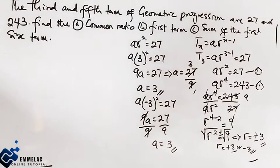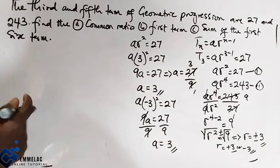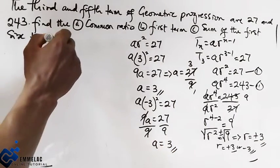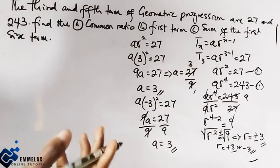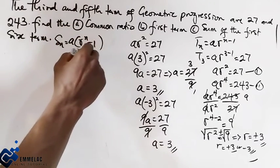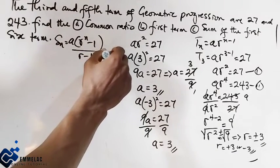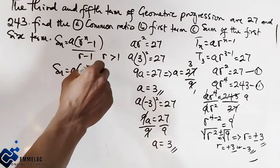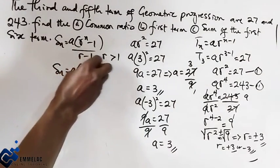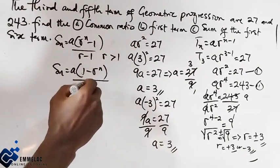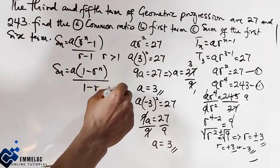Now we find the sum of the first six terms. For the sum of a geometric progression, there are two formulas depending on the value of the common ratio. When R is greater than 1: S_n equals A times (R^n minus 1) over (R minus 1). When R is less than 1: S_n equals A times (1 minus R^n) over (1 minus R).